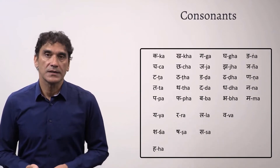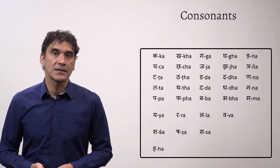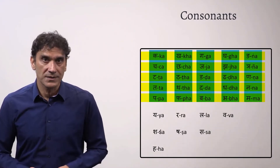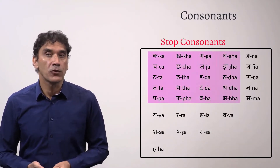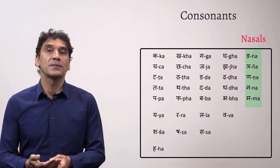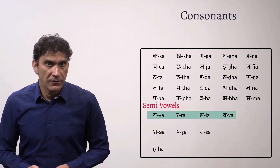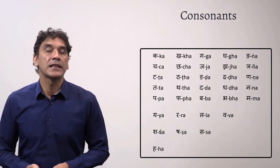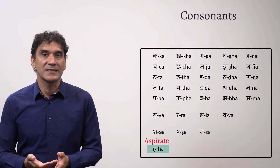Then come the consonants. The consonants are also classified into a few sets. The first set has five rows and five columns — the first four columns are stop consonants and the fifth column is nasals. The second set has semi-vowels, the third set is sibilants, and the final one-letter set is the aspirate H.